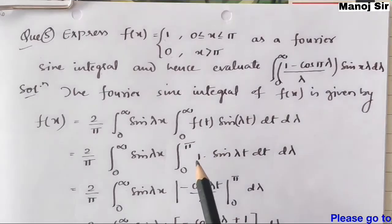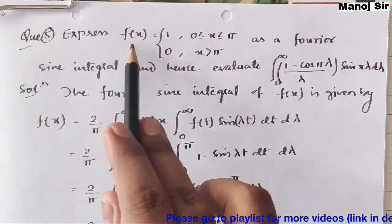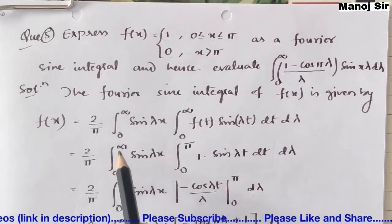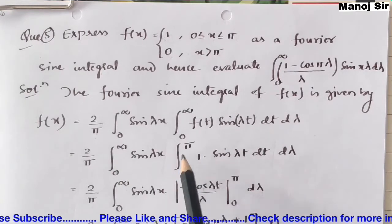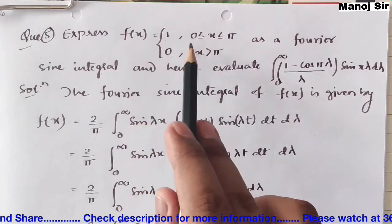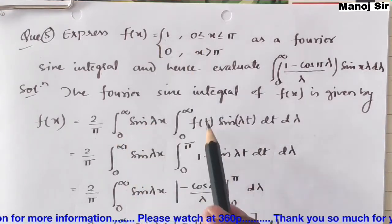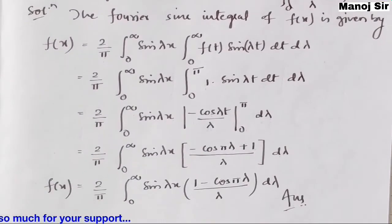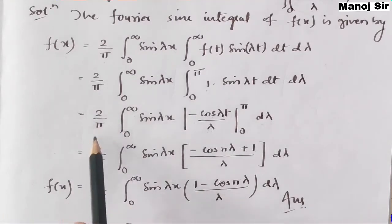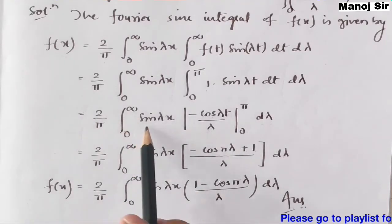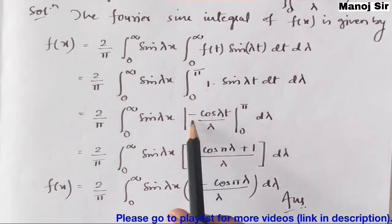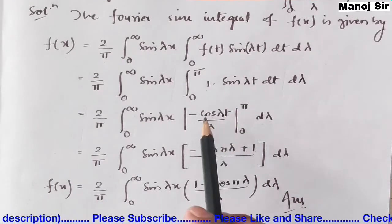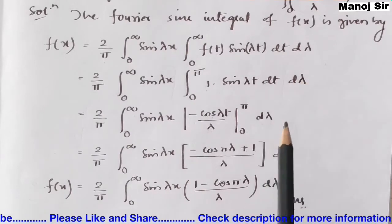Changing the variable, we get (2/π) × integration from 0 to infinity of sin(λx) × [integration from 0 to π of 1 · sin(λt) dt] dλ. Now integrating the inner part: the integral of sin(λt) becomes −cos(λt)/λ, evaluated from 0 to π.